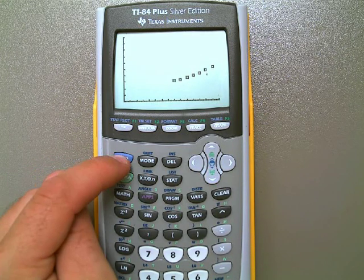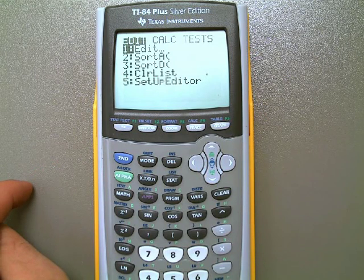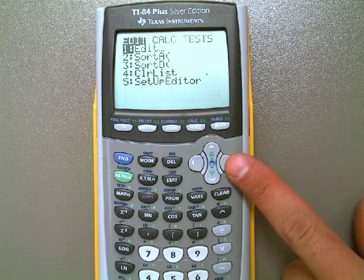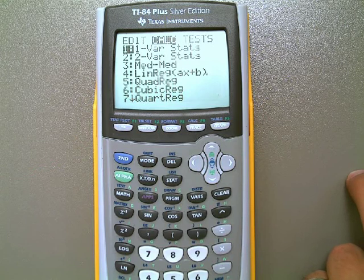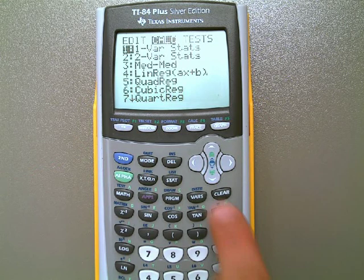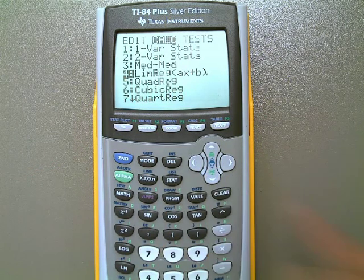We're going to go back into statistics, except this time, rather than edit our data which has already been filled in, we're going to hit the right button here and go to the Calculate menu. In the Calculate menu you're going to see option number four, which is right here, which is linear regression.